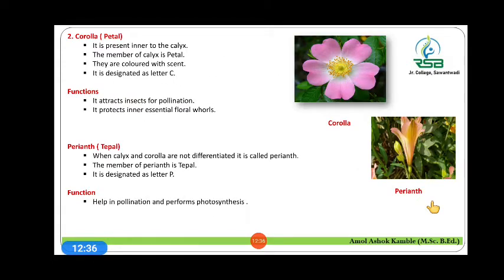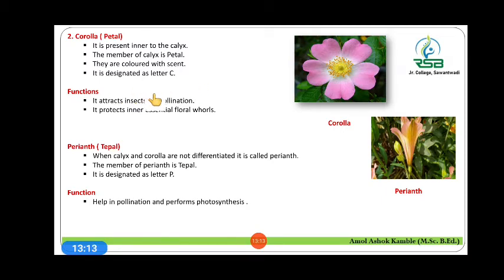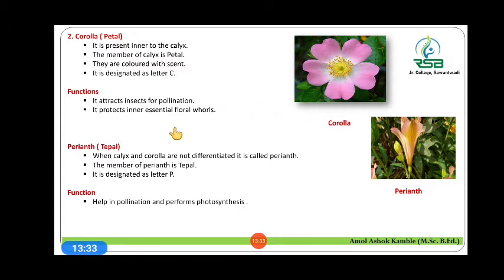Then there is the corolla. It is the colored structure and its member is petal. The member of corolla is petal. It is present inner to the calyx. Petals are colored and have scent. It is designated by the letter capital C. The functions of corolla are: it attracts insects for pollination through its attractive color, and it protects the inner essential floral whorls.